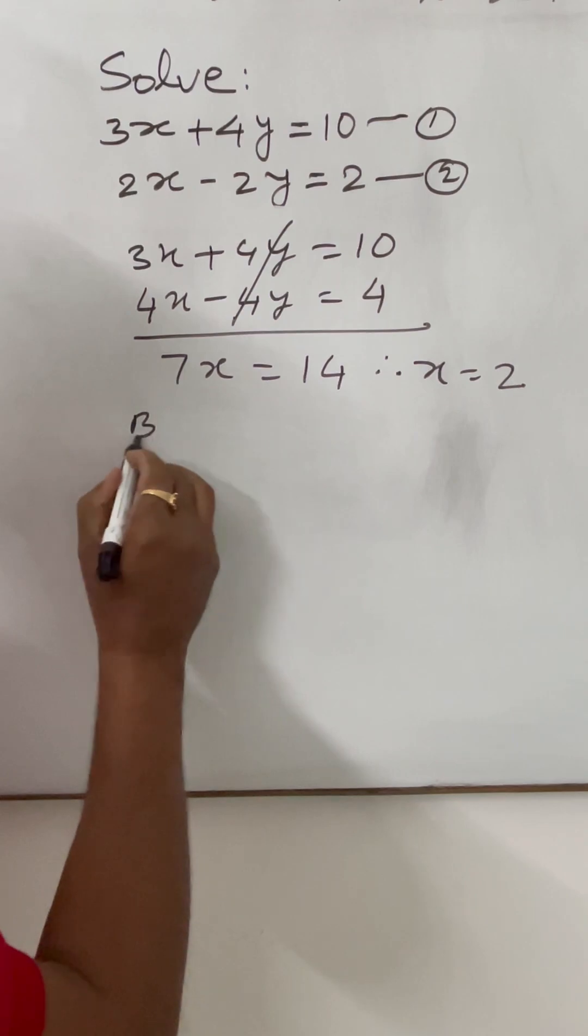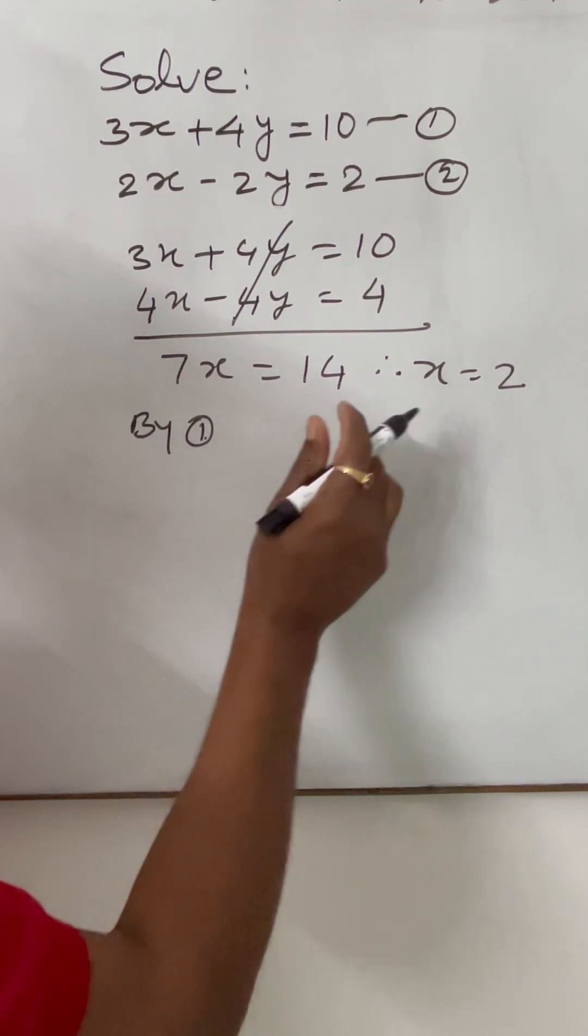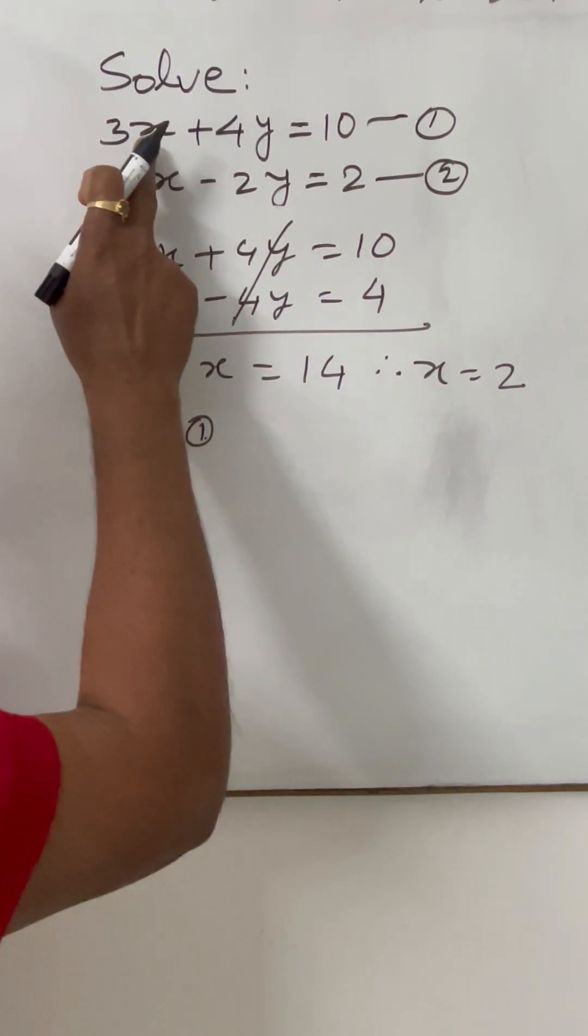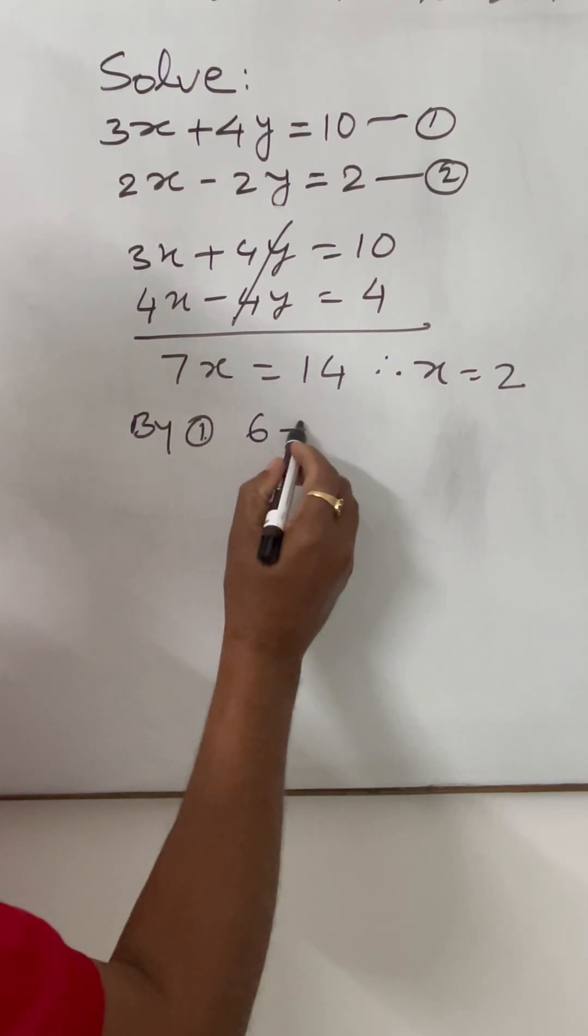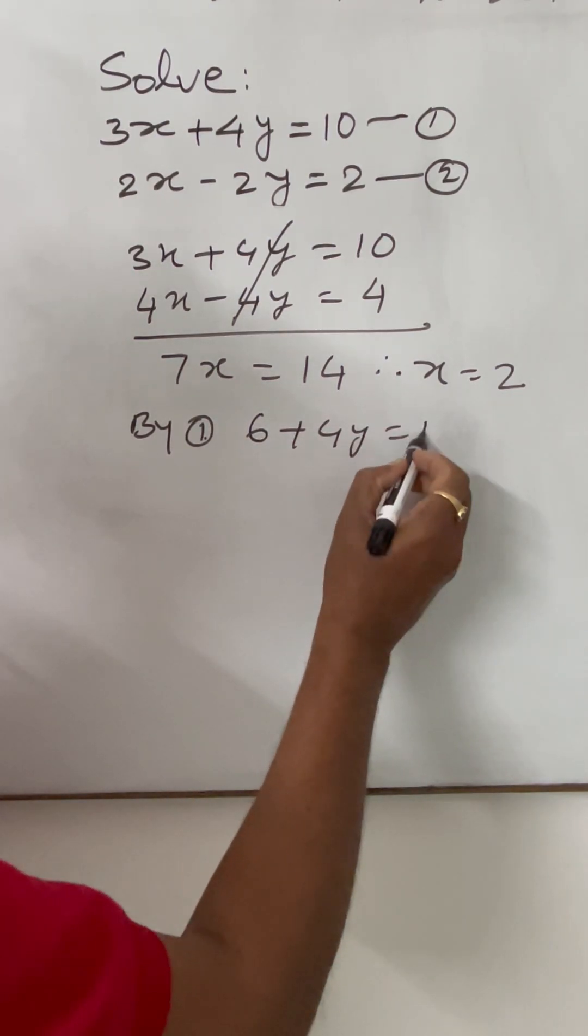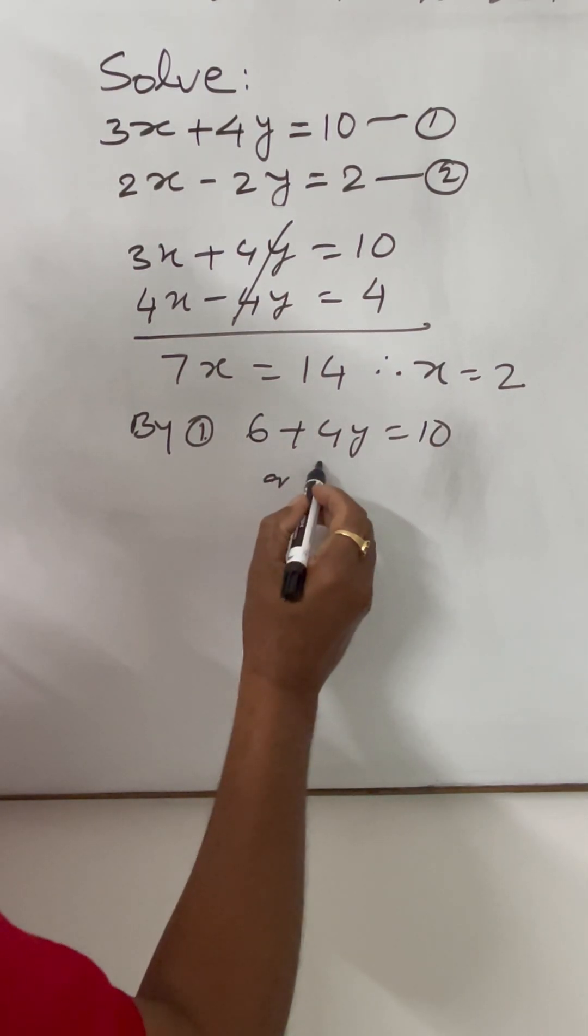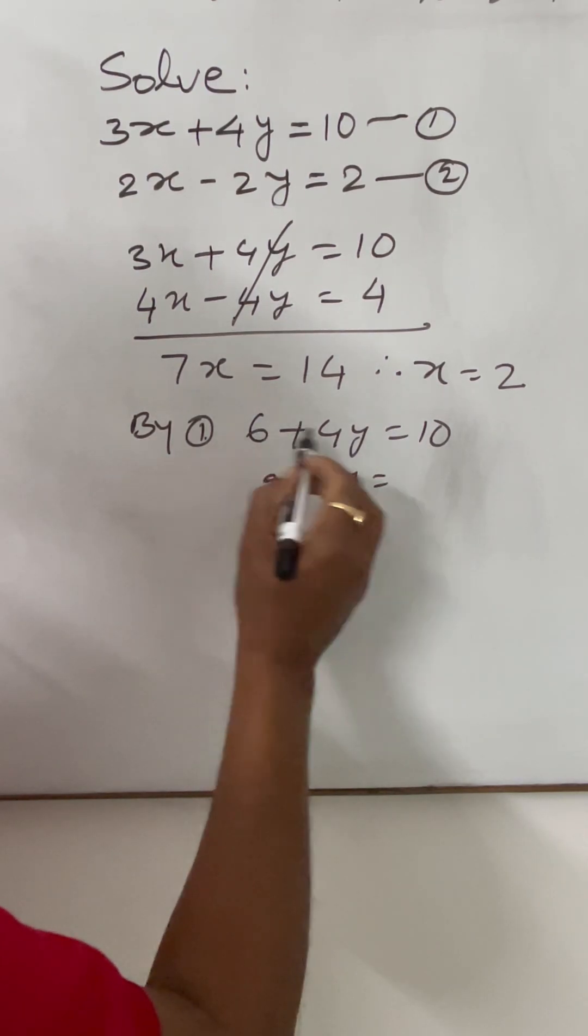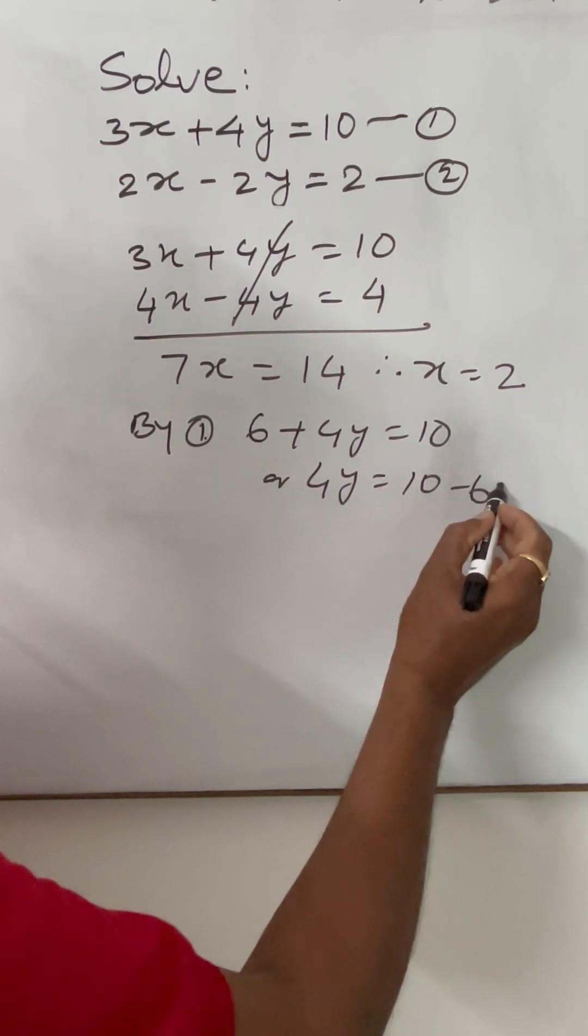And by equation 1, putting value of x is equal to 2 here, 6 plus 4y is equal to 10 or 4y is equal to 10 minus 6, that is 4.